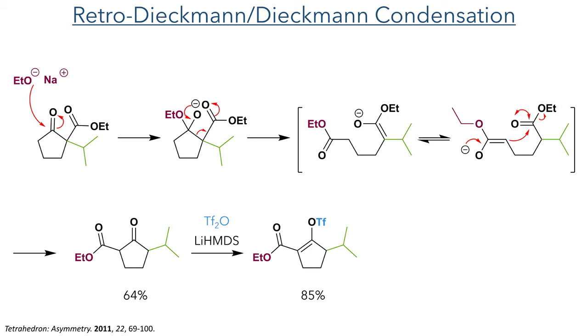Taking this product forward, the more acidic alpha proton was then deprotonated using lithium HMDS and the enolate was triflated using triflic anhydride to generate the product in an 85% yield.